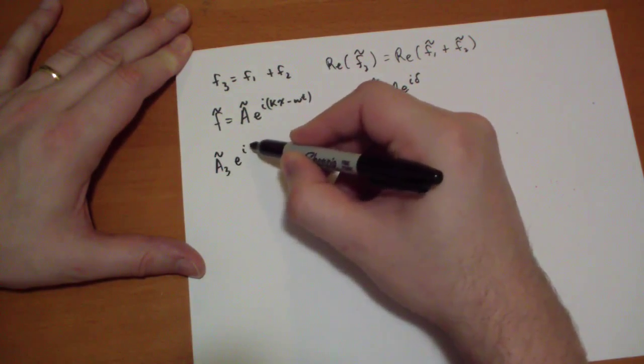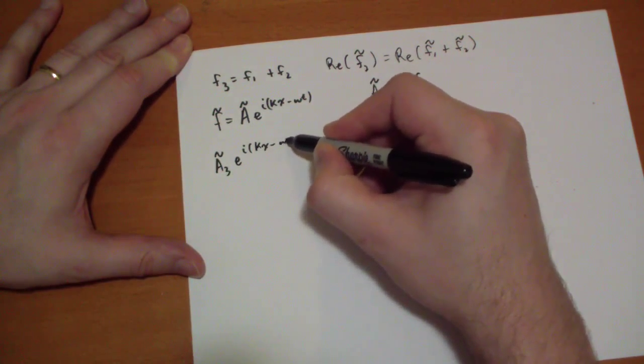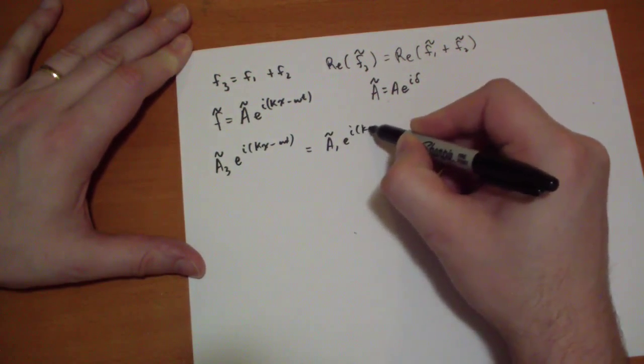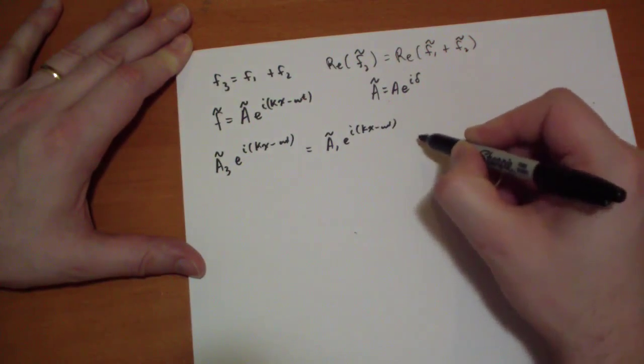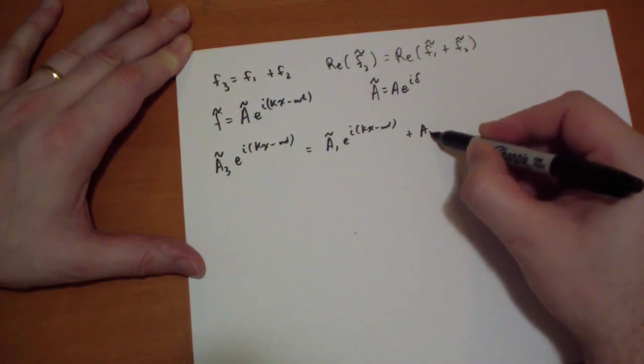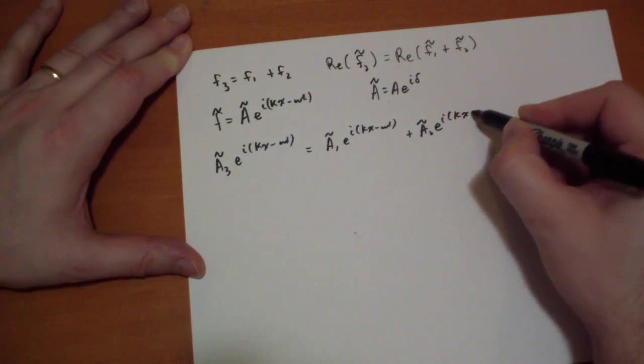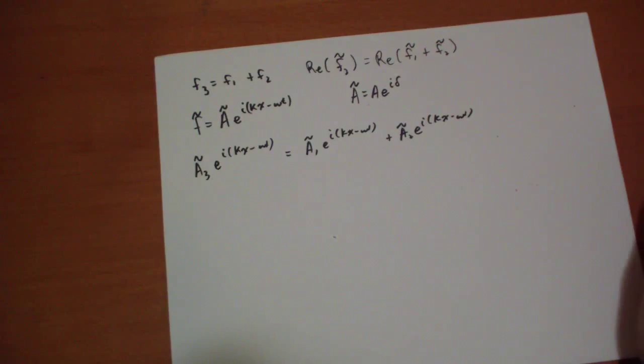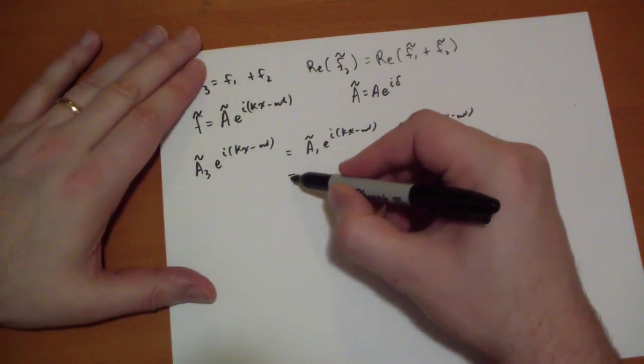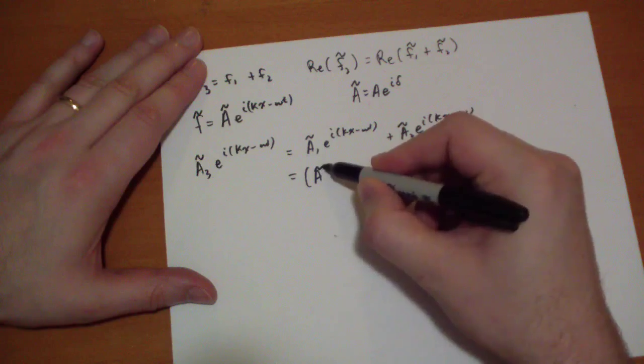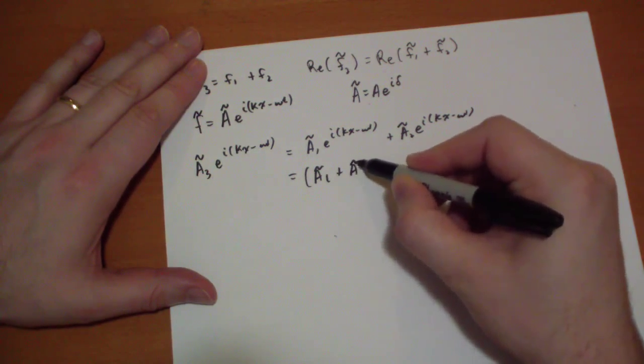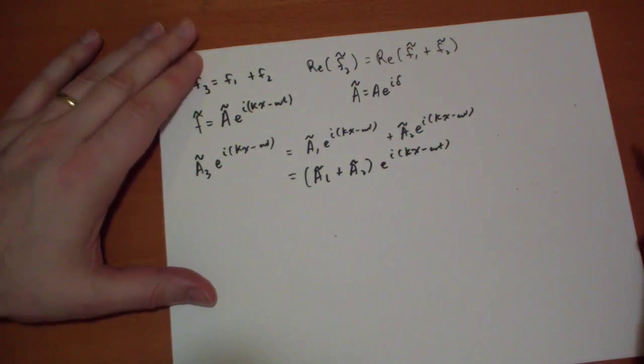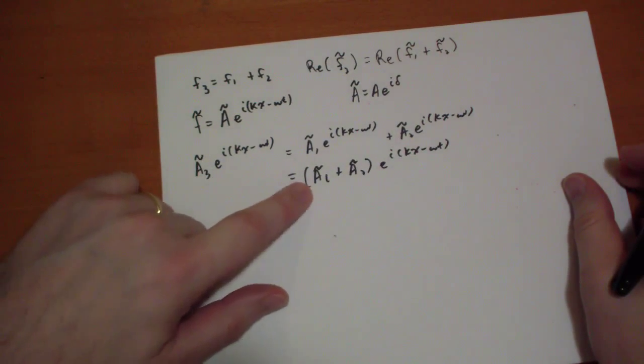So we add them together and we basically get complex A3 e to the i KX minus omega T is equal to complex A1 e to the i KX minus omega T plus the complex A2 e to the i KX minus omega T for this problem because they had the same wave number. So obviously you could factor that out, and A3 is just A1 plus A2. The complex A3 is equal to the complex A1 plus the complex A2.